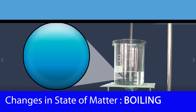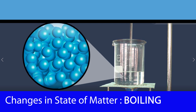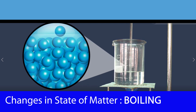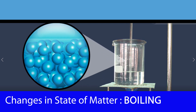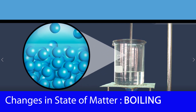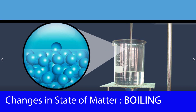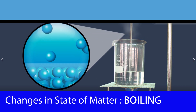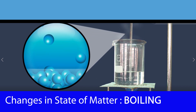The particles obtain energy and move faster. Heat is used to break the bond between the liquid particles. When the temperature reaches the boiling point, the particles move freely and randomly, and water turns into steam. So liquid turns into gas during boiling.